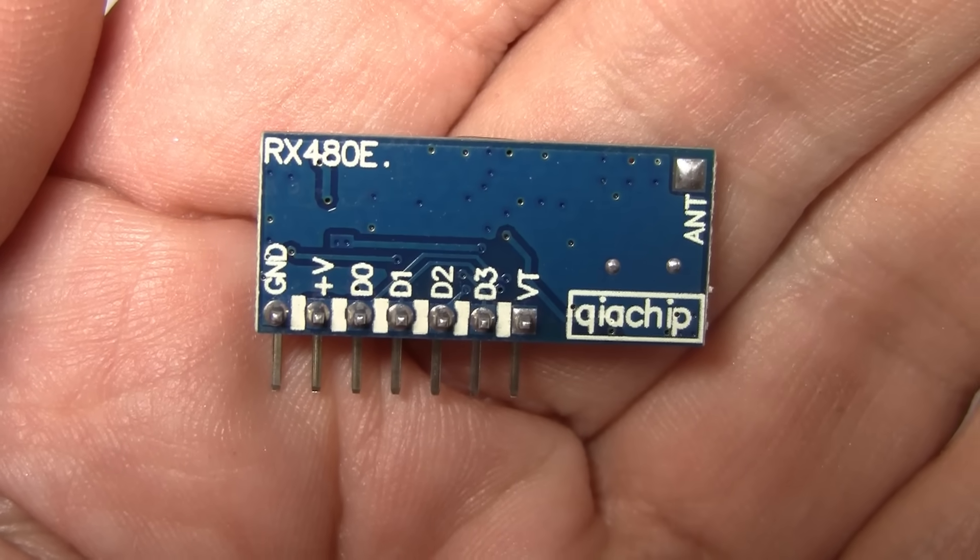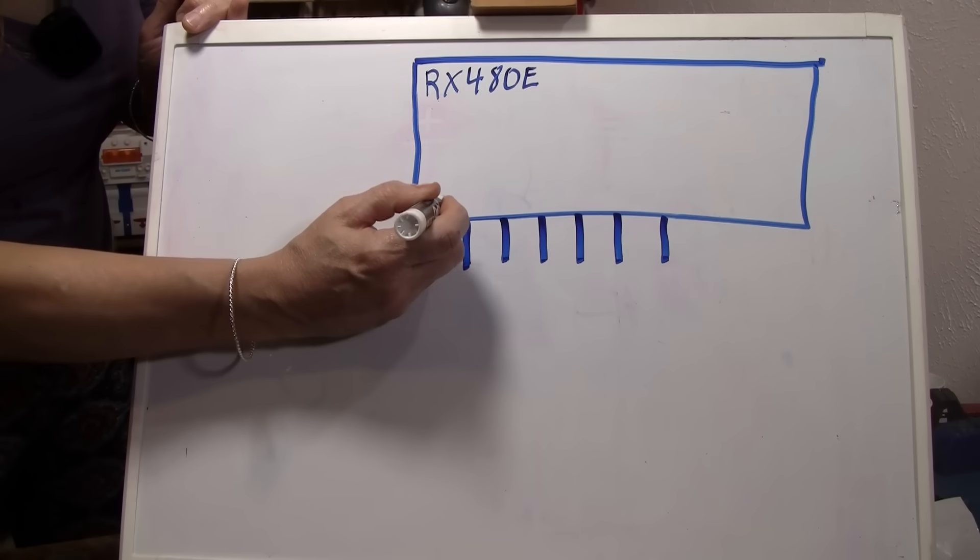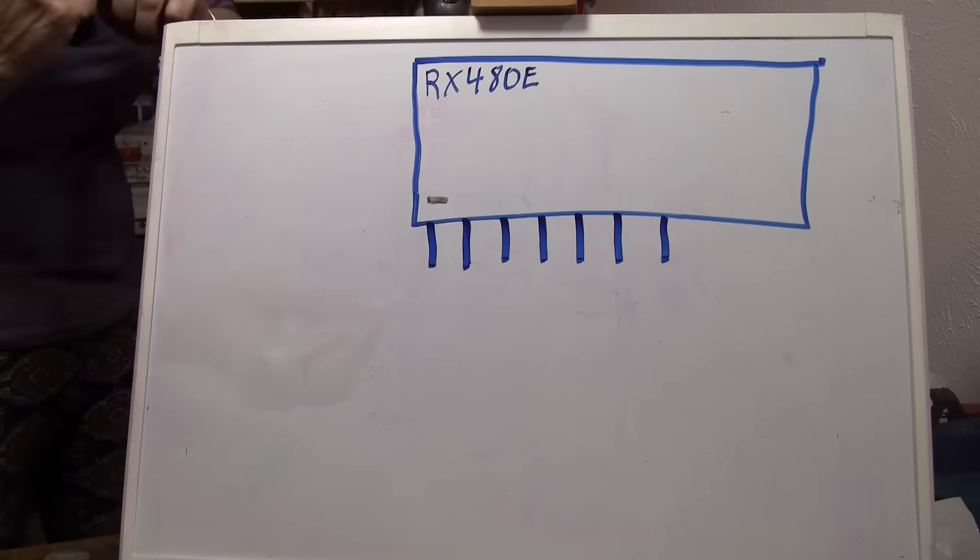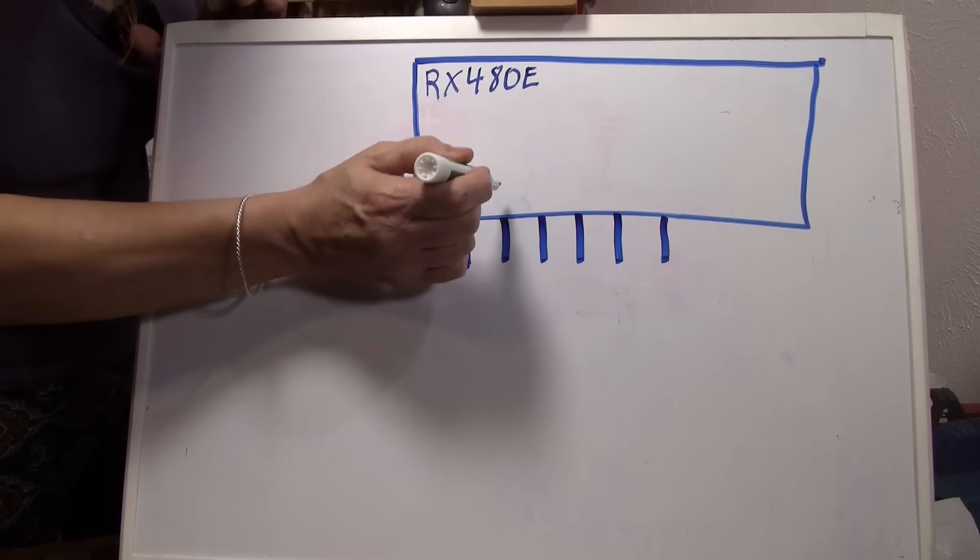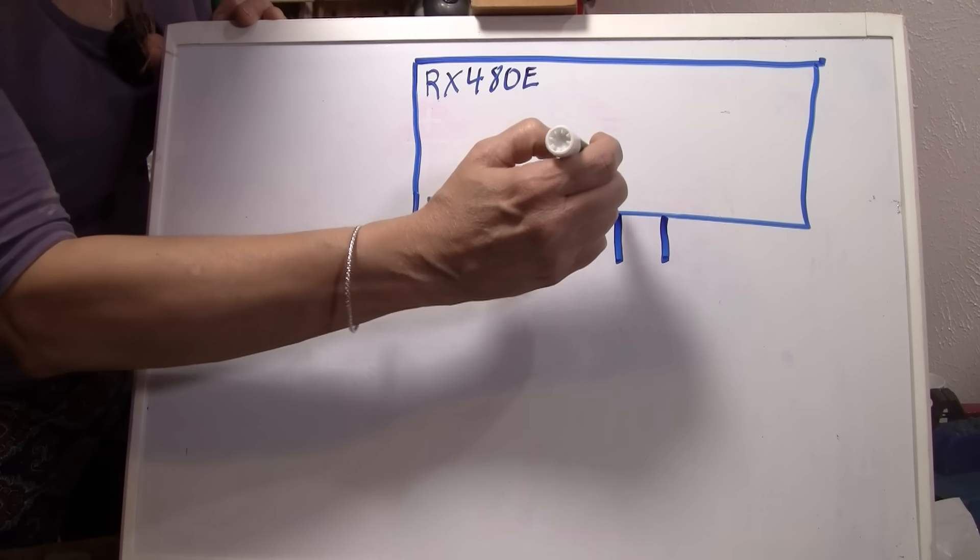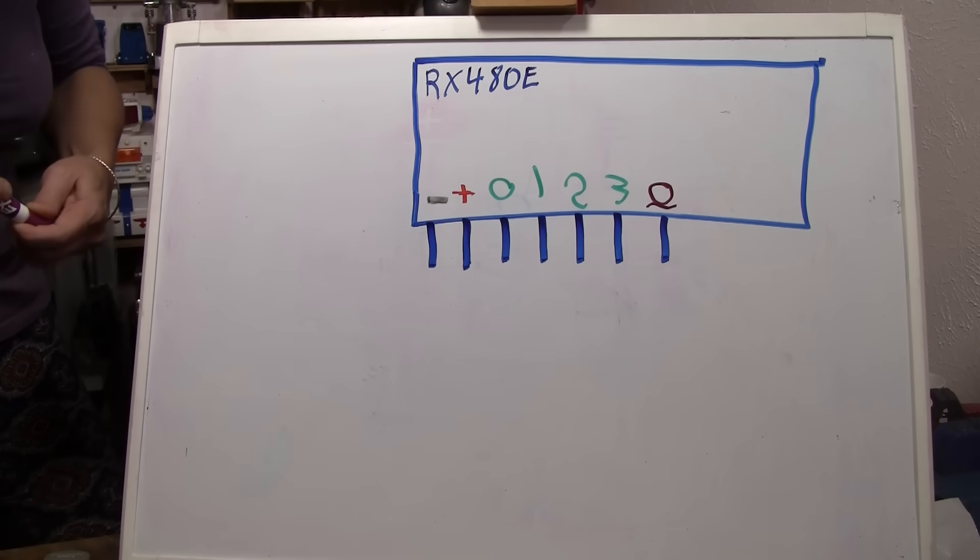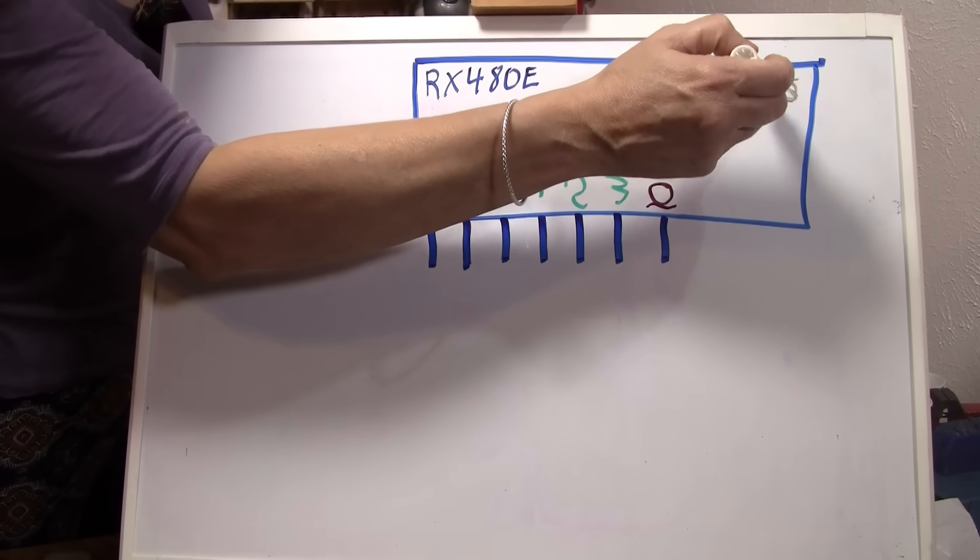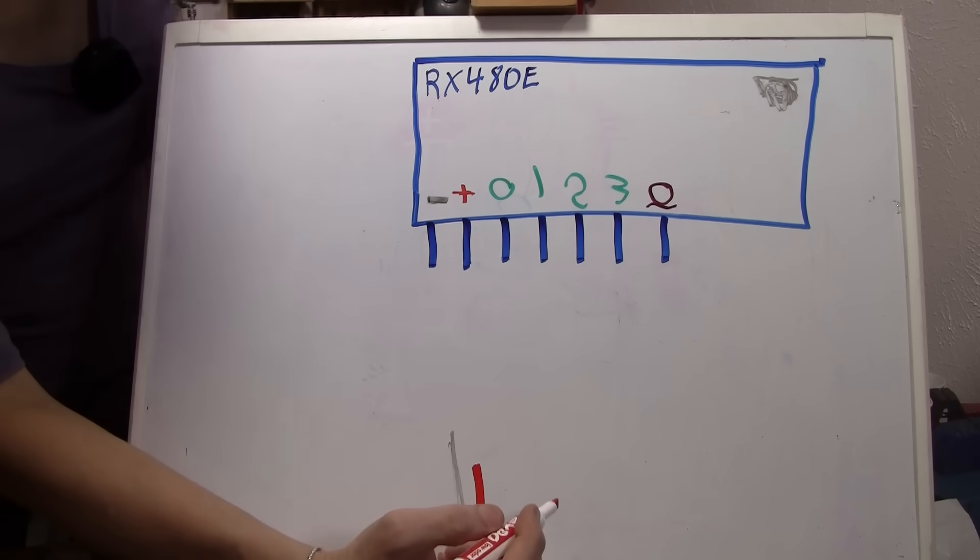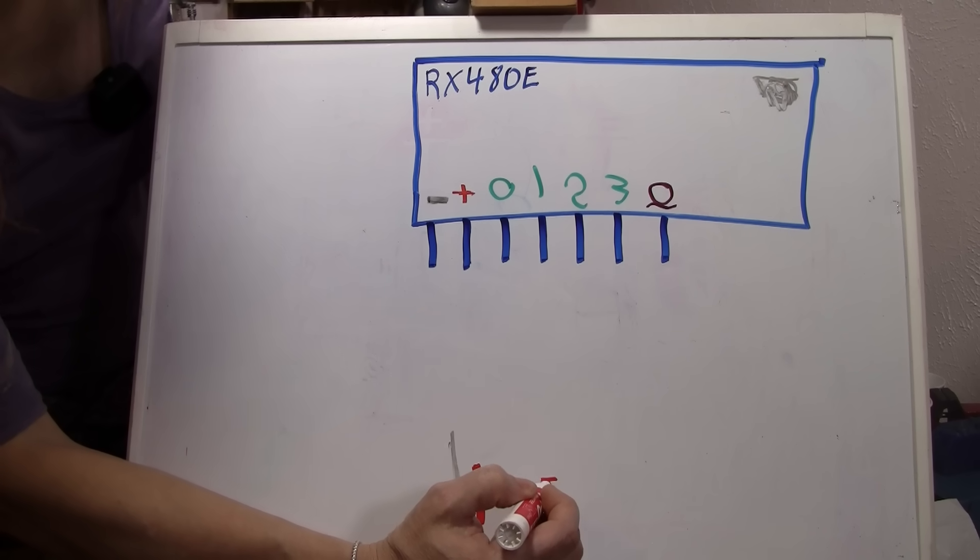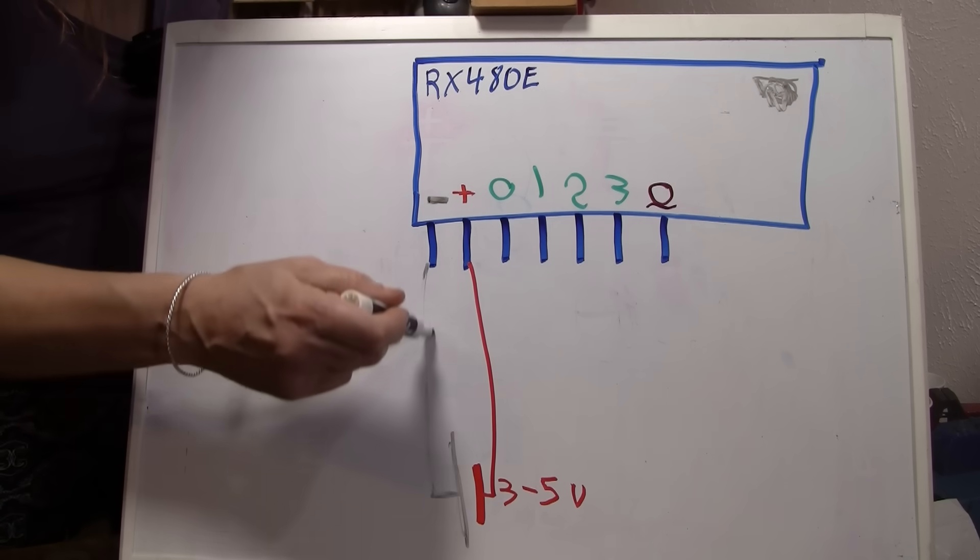On the back, it tells you what each pin is for and there are seven different pins. The first pin is your negative or ground. Your second pin is the positive. Then you have four data, zero, one, two, three, and then you have, it's an output. I'll get to that. Also, up here, there's a spot to solder an antenna on. But basically, you're going to need a power supply that is three to five volts and they will need positive will go to there and negative goes to there.